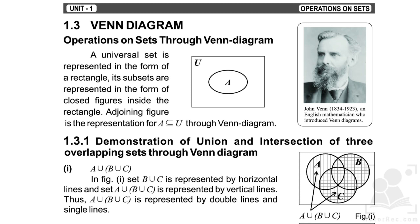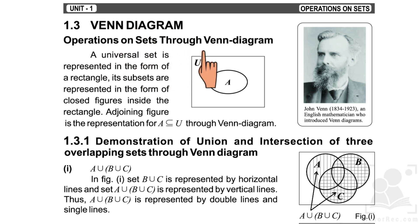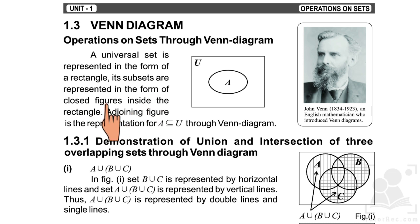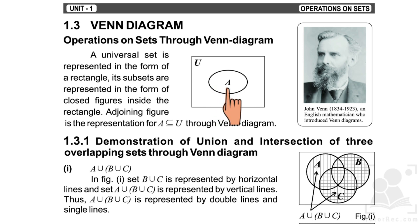Today's topic is about the Venn diagram — how we do set representation through Venn diagram. Operations on sets through Venn diagram. A Venn diagram was discovered by the English mathematician John Venn. In a Venn diagram, the universal set is represented by a rectangle box, and its subsets are represented in the form of closed figures inside the rectangle.